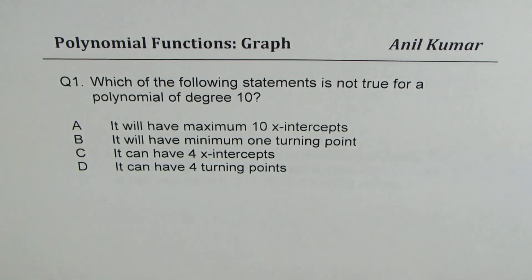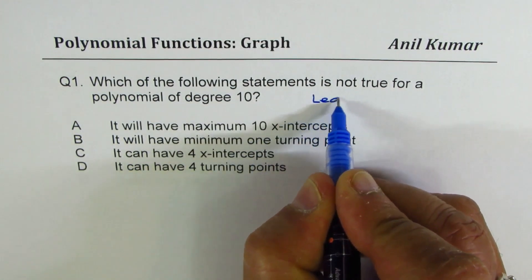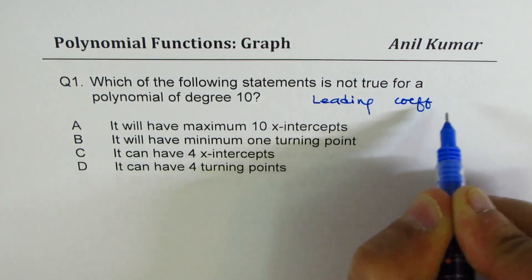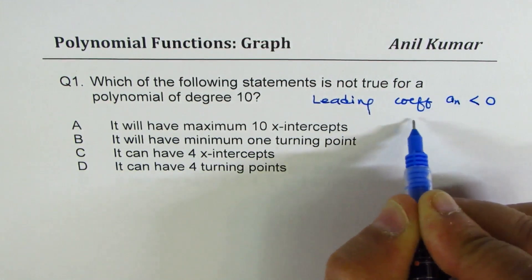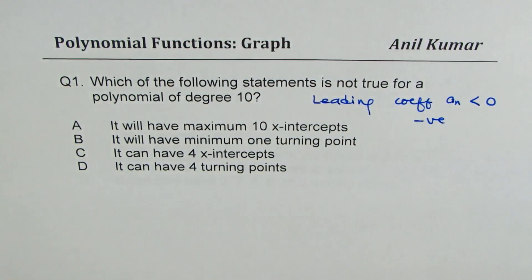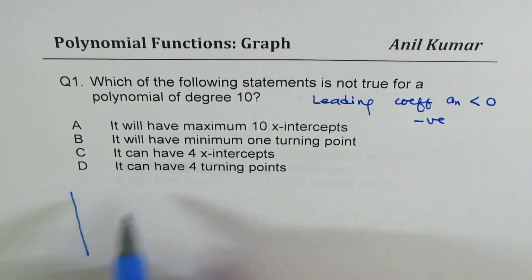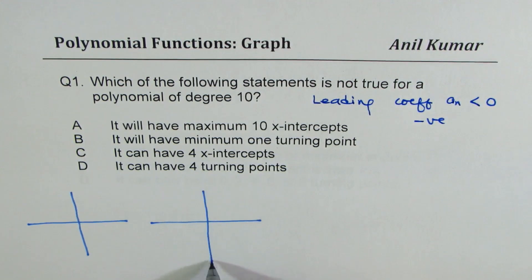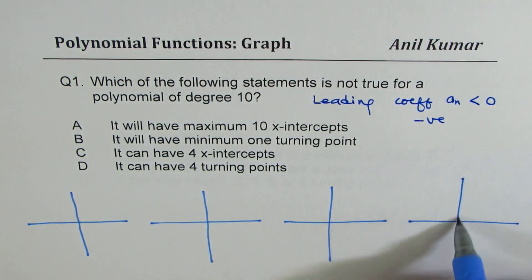To solve this, let us assume that the leading coefficient is negative — let us say a_n is less than 0. Based on this, I will show all types of possibilities. There are 4 different cases, so let us take them one by one.